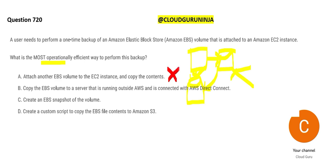Option B says that you copy the volume to a server that is running outside AWS. This is totally a crap solution. The moment you take something out, you have to pay money. Second, AWS wants you to stay in the AWS environment, otherwise they lose business. They will never give you a solution that says move it outside AWS and then bring it back.